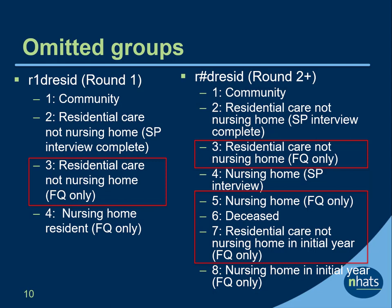Now let's review the groups to be omitted from this analytic sample. The 3s in round 1 and the 3s, 5s, and 7s in round 2 or later are omitted because they were eligible for and did not complete an SP interview. Note that their analytic weights have been set to 0 and they are represented by other cases in the sample with SP interviews. In addition, in round 2 or later, the 6s are omitted because they are deceased.